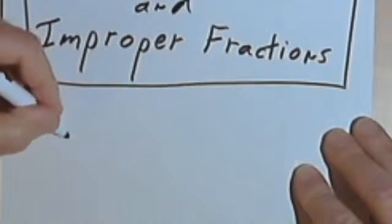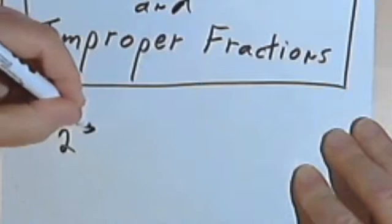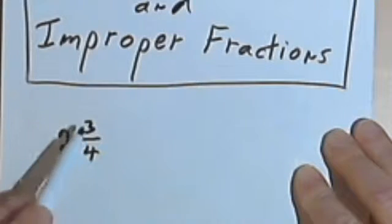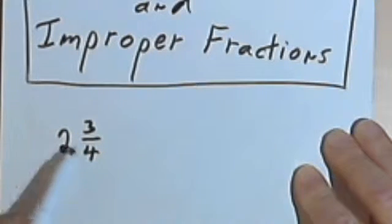So if you have something like 2 and 3 quarters, this is considered a mixed number because you have a whole number, the 2, and you have 3 quarters, which is a fraction. So this is a mixed number.